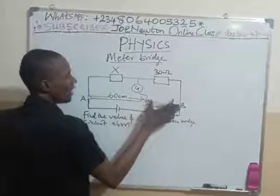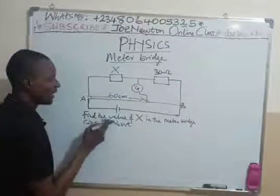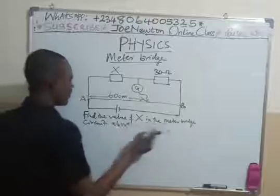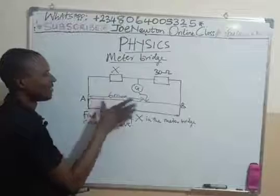So, we are here to know the distance here. Of course, it is simple. Then we are asked to find the value of X in the meter bridge circuit above. The balance point is at 60 cm.